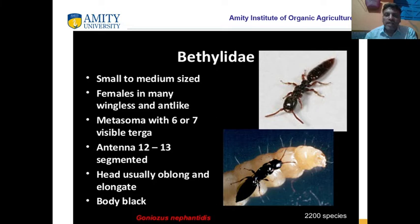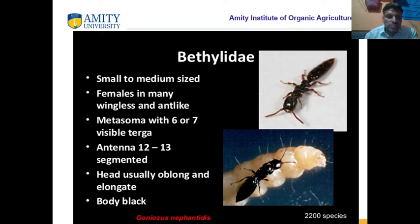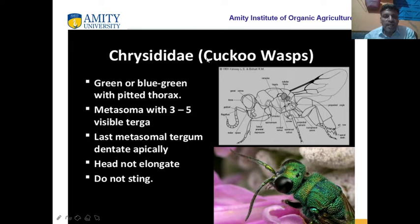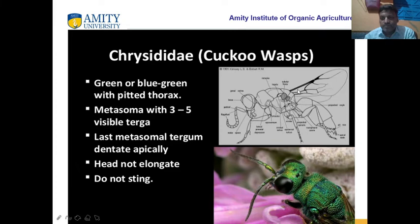The family Bethylidae is small to medium size. The example is Coenogynus Nephaletidus. It has 6 to 7 visible terga, and the antenna is 12 to 13 segmented. The head is usually long and elongated, and they have a black body. Chrysididae are called cuckoo wasps. They are green or blue-green with pitted thorax.